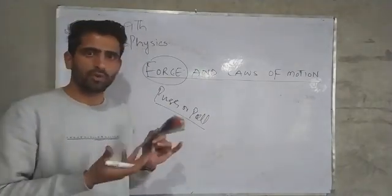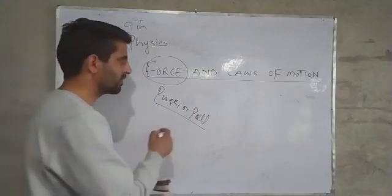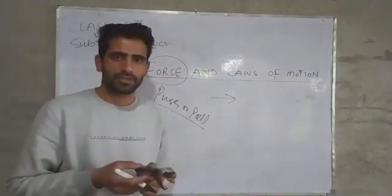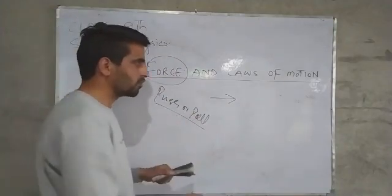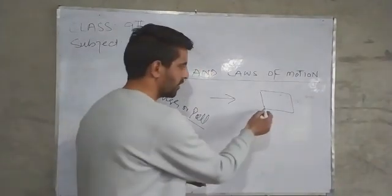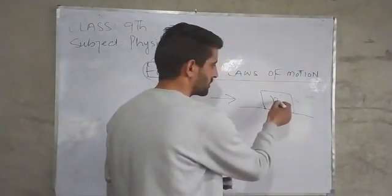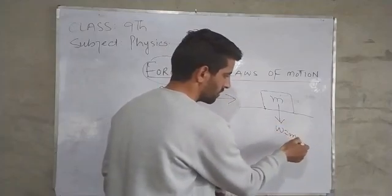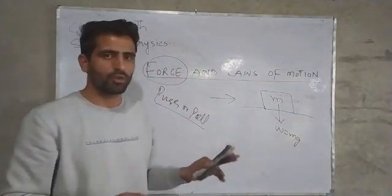So what are the effects that force can produce? For example, if there's a body at rest and I'm applying force on it. Suppose there's a wooden block lying on the surface of Earth. We all know that this wooden block has got mass M and its weight is W equals MG. We have already discussed these things in unit first.